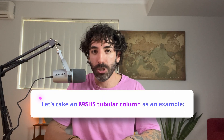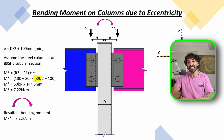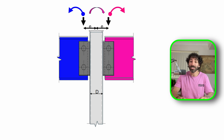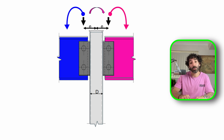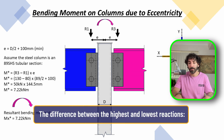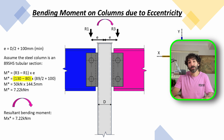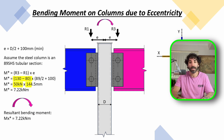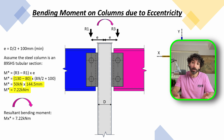Let's take an 89 SHS tubular column as an example. The eccentricity equals 89 mm divided by 2, plus 100 mm, which works out to 144.5 mm or 0.1445 meters. Since loads are coming from both sides, their moments partially cancel each other out — one side tries to rotate left while the other rotates right. So we take the difference between the highest and lowest reactions: 130 kN minus 80 kN equals 50 kN. Using moment = force × distance: 50 kN × 0.1445 m = 7.22 kNm.